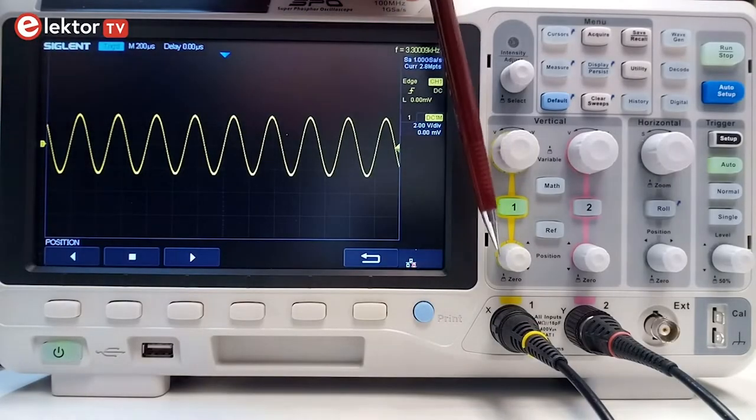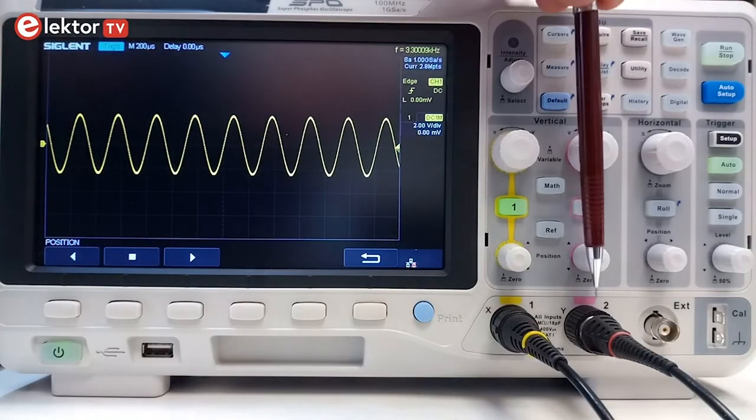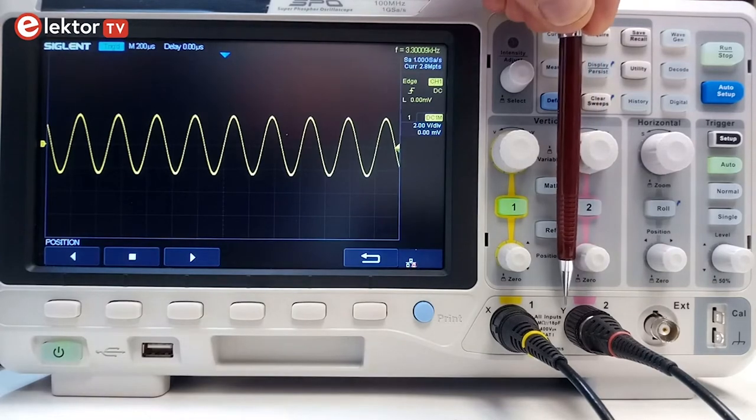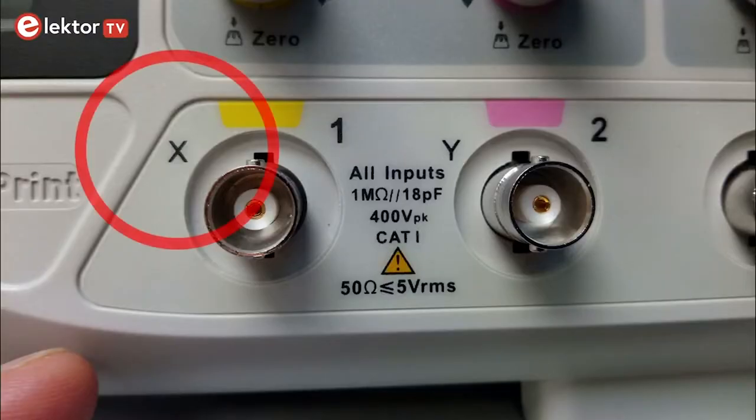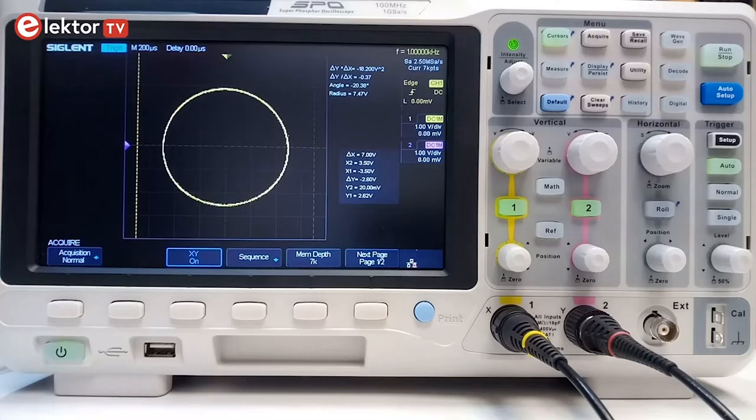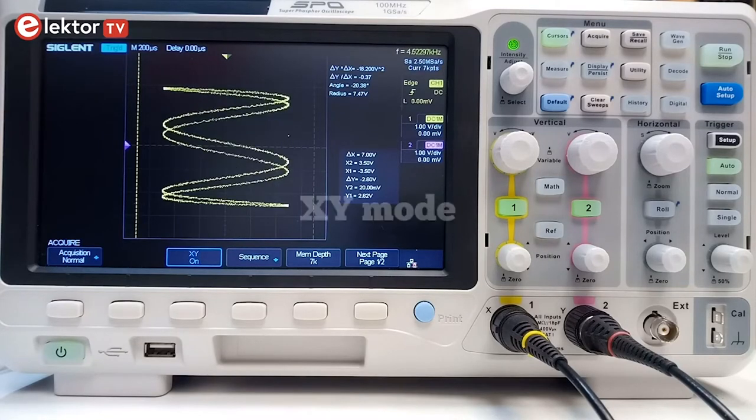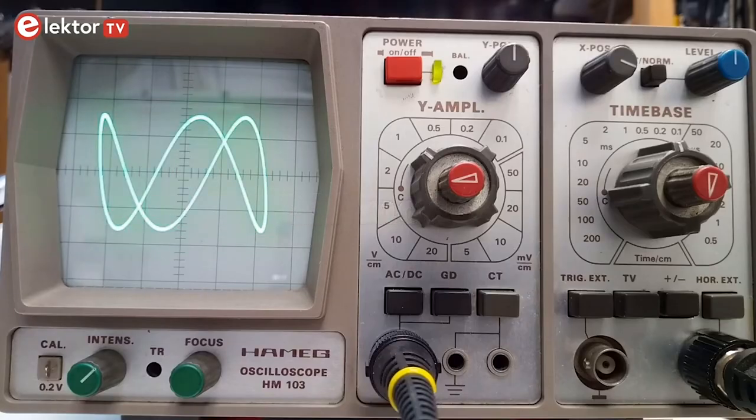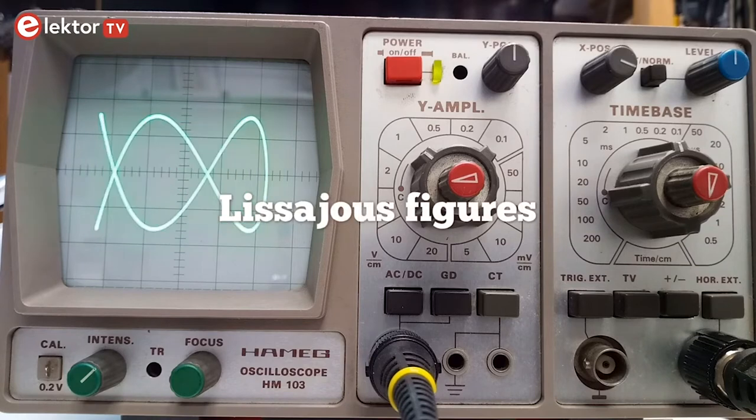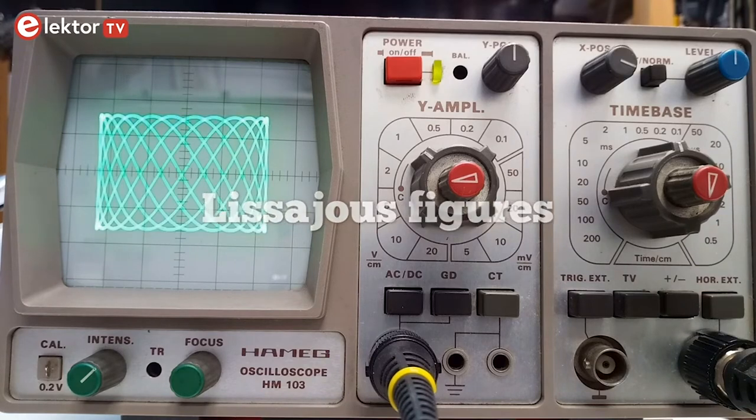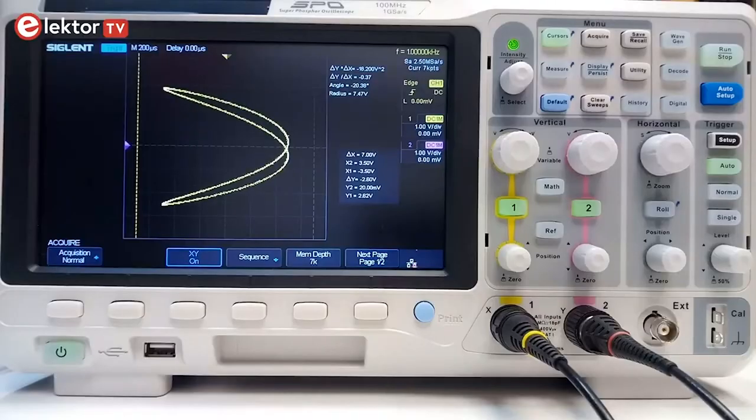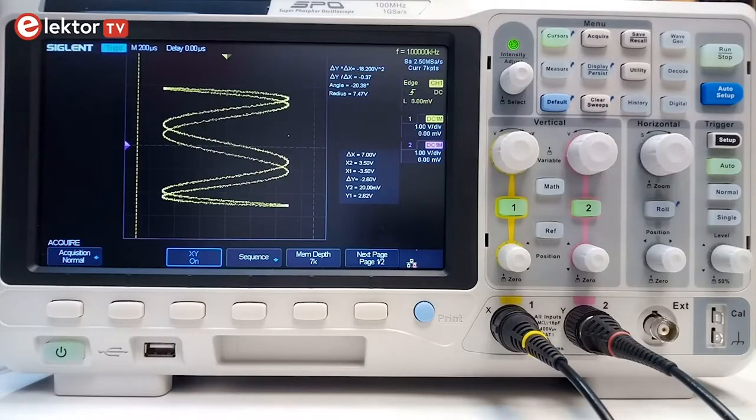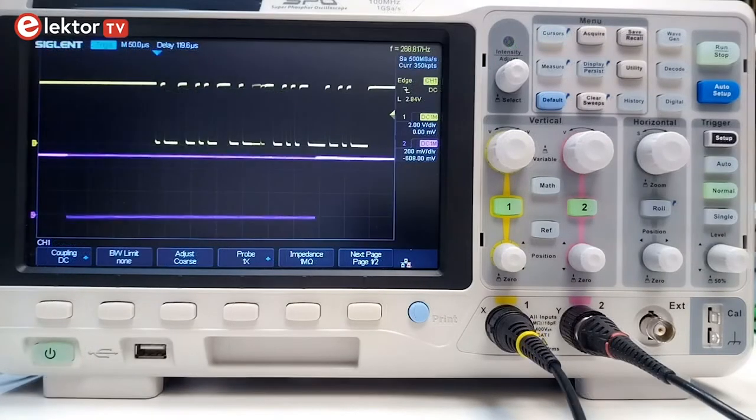Another point of confusion can be that input connectors, besides being labeled channel 1 and 2, are sometimes also labeled X and Y. This refers to a special operation mode of the oscilloscope, in which the X input controls the horizontal axis instead of the vertical. This is the mode to create the famous Lissajou figures that they like to show in old sci-fi movies. We will not use this XY mode in this video, for us the horizontal axis will always represent time.